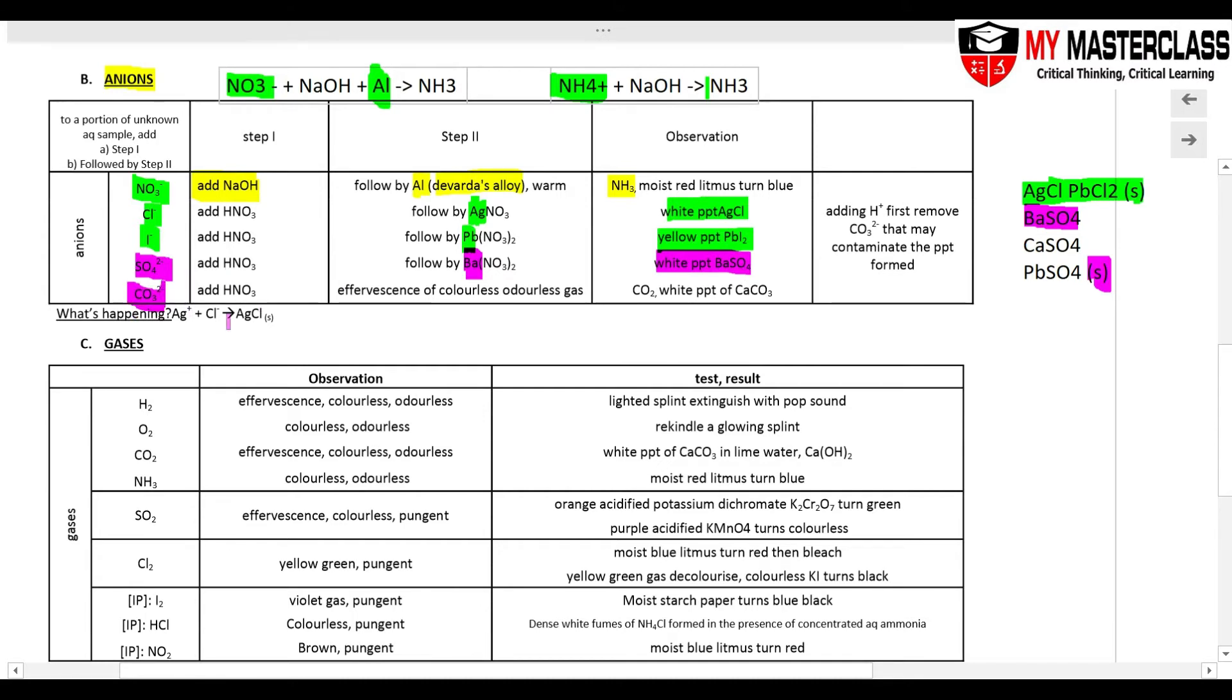And last but not least, my carbonate. If I add an acid in, this will be effervescence, because CO3²- always think of CO2 formed. So I will see effervescence, colorless, odorless gas. If I bubble it through lime water, I will get a white precipitate. So if you look at all these steps, this is essentially your solubility table. So remember, this table is the easiest.